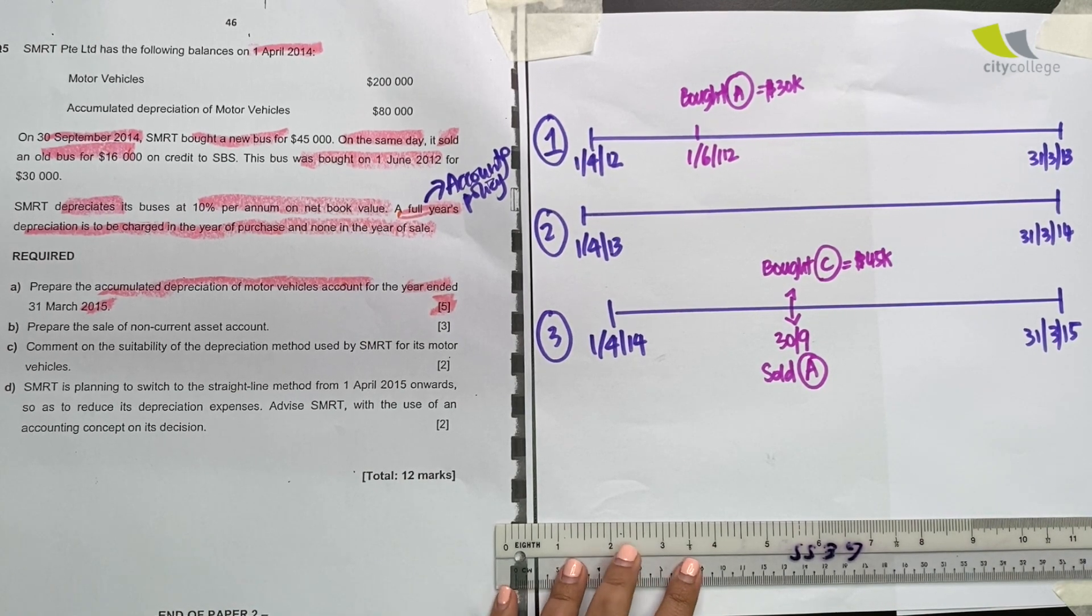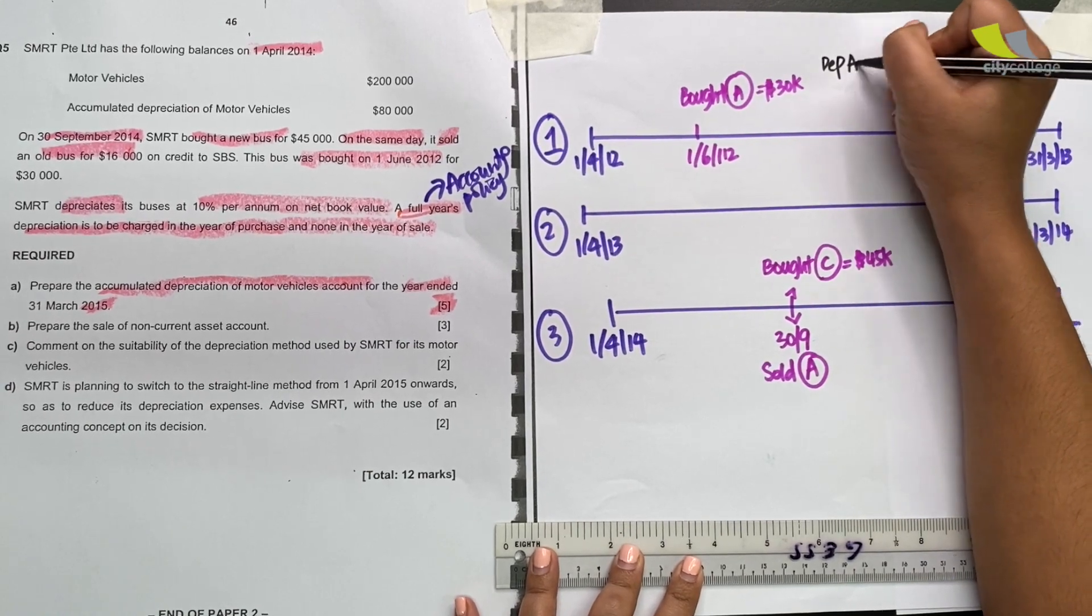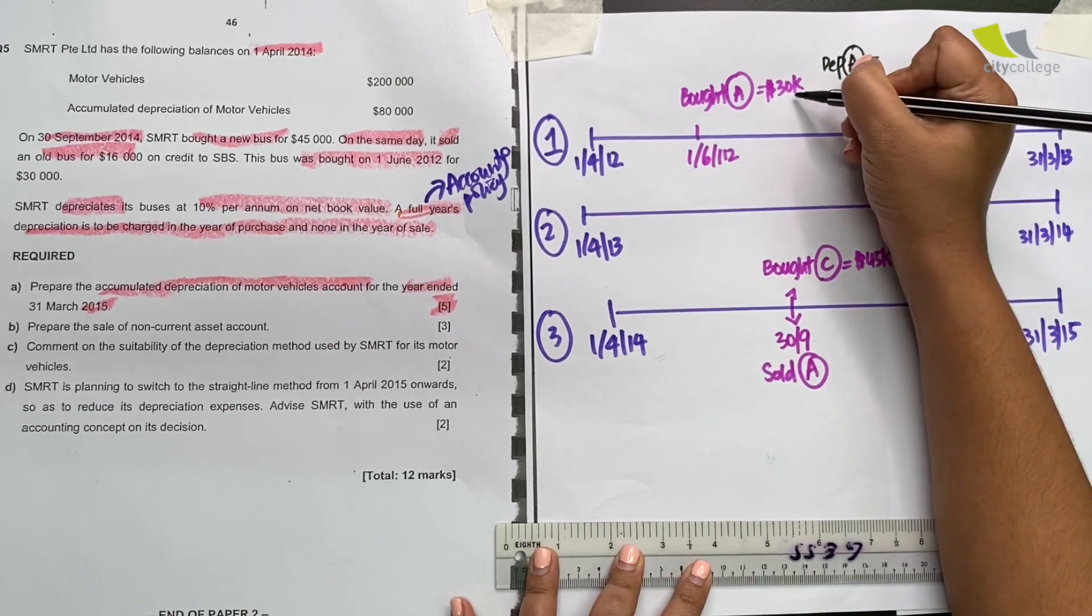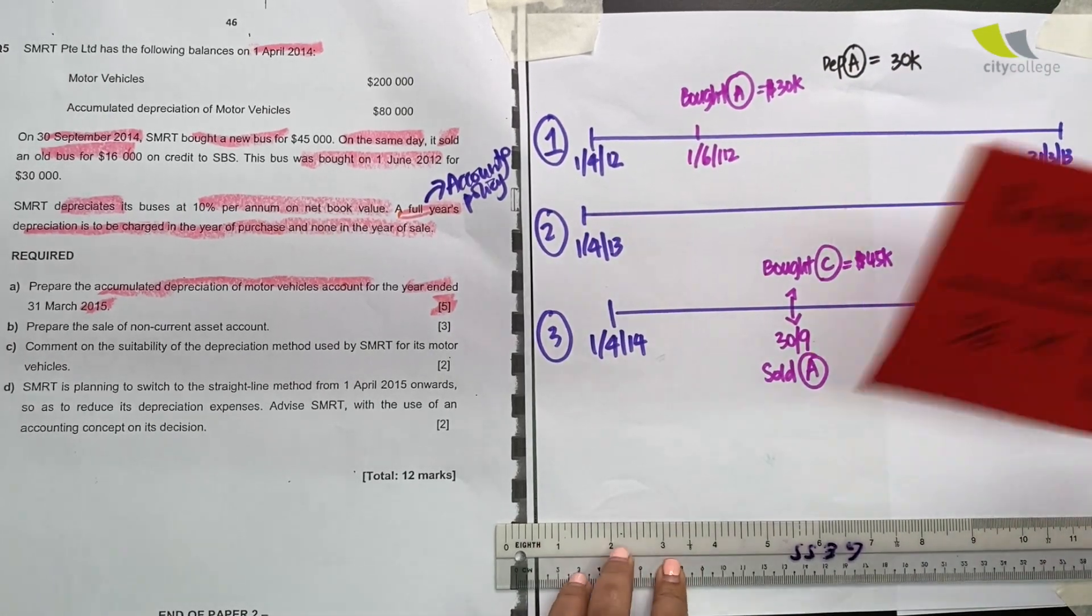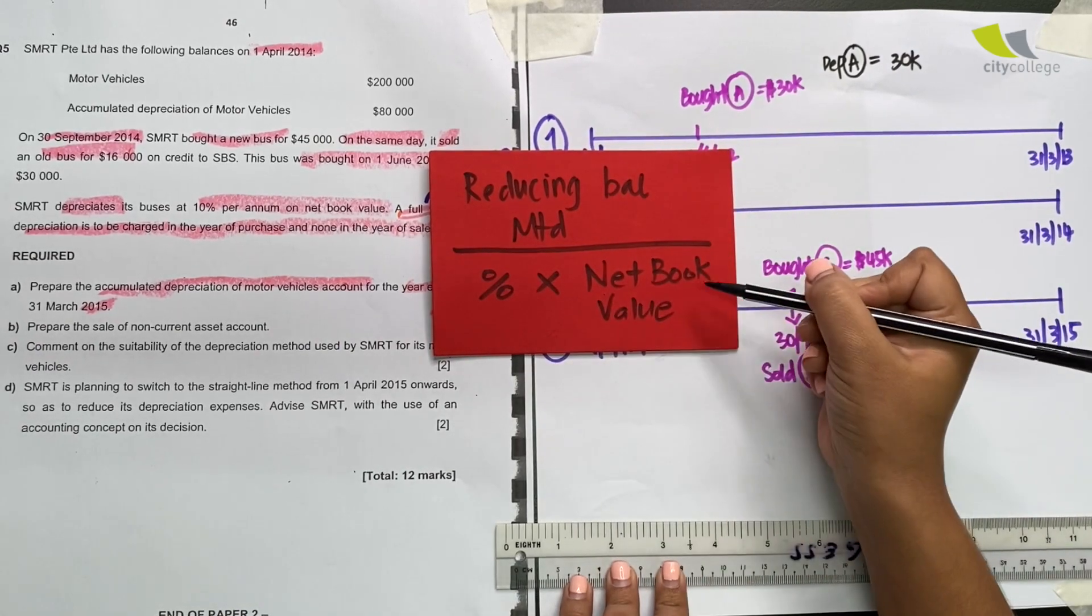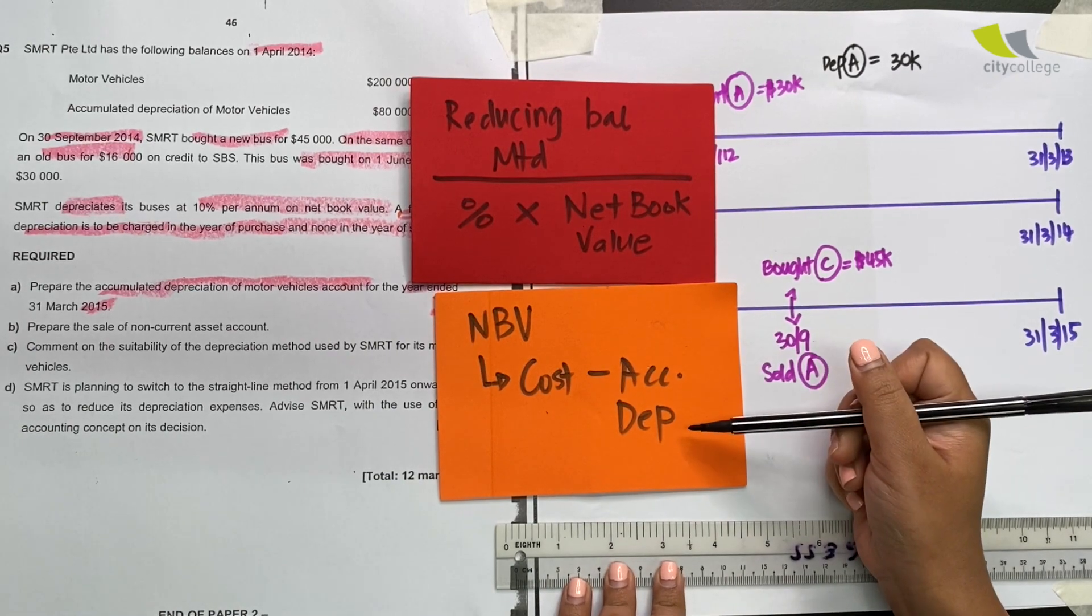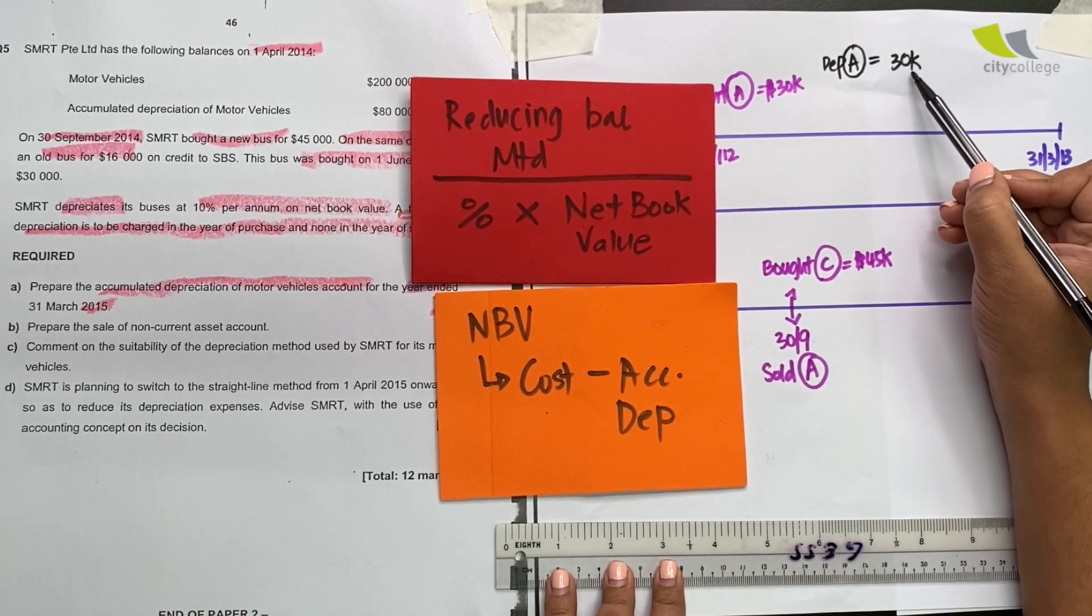So let's do our workings right now. To calculate depreciation for asset A for the first year, cost price is $30,000. Remember the formula? It says percentage times net book value. What is net book value? Cost minus accumulated depreciation. So I've got the cost price $30,000 here.